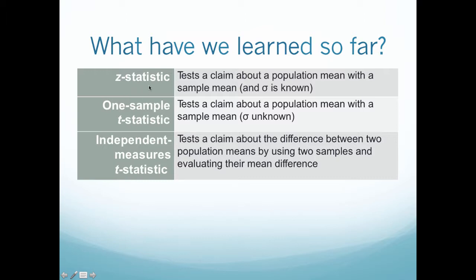So let's recap for a second. A z-statistic tested a claim about a population mean with a sample mean when sigma is known, and that was a larger sample size, greater than 40. With the one-sample t-statistic, we tested a claim about a population mean with sample mean when variance was unknown, and this was kind of a smaller sample size. The independent measures t-statistic tests a claim about the difference between two different populations. So this was the difference in means, where we used two different samples and evaluated their mean difference.